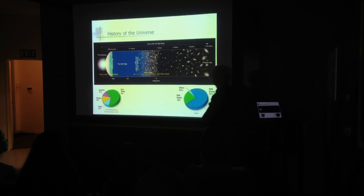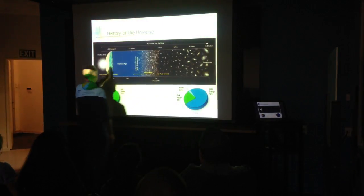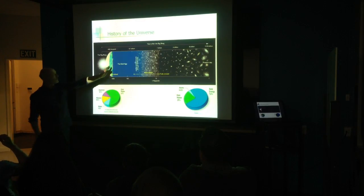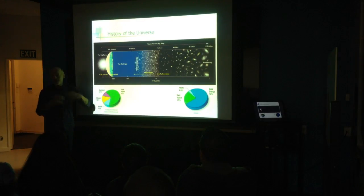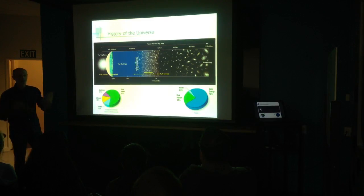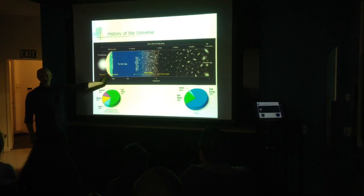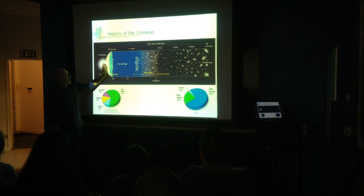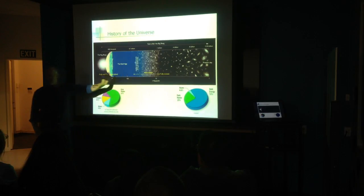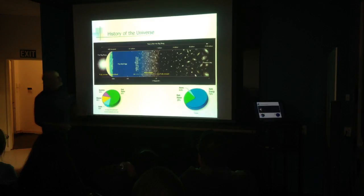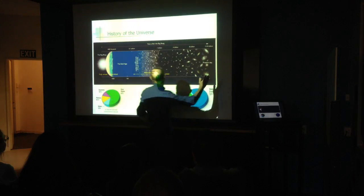This cartoon shows us the epoch of recombination, where the temperature dropped to 3,000 degrees in the universe and atoms combined with free electrons, making the material of the universe neutral. Through this period, all that's happening is the universe is cooling and expanding — nothing else is really going on.